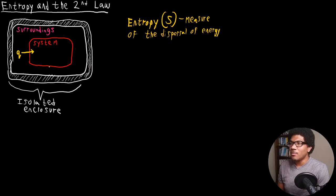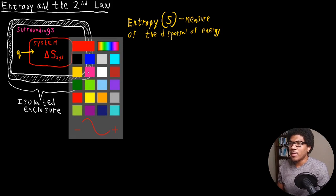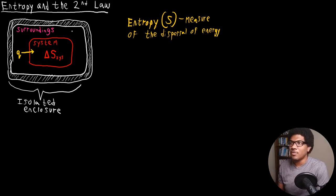For this isolated enclosure, let's say there's some transfer of heat from the surroundings to the system. That means there's going to be some change in the dispersal of energy for the system, because it's receiving some energy from the surroundings. So you're going to have a delta S for the system, and the same thing for the surroundings — some change in its dispersal of energy since it's giving energy to the system in the form of heat. So we're going to have a delta S for the surroundings as well.